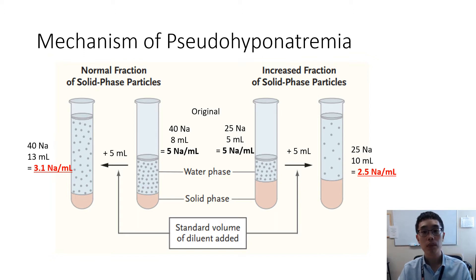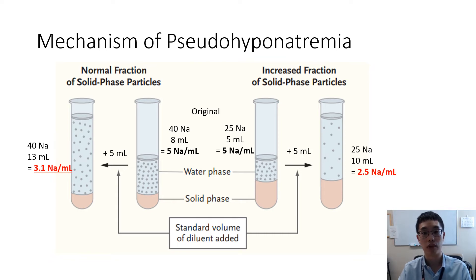We can demonstrate how this works on this diagram. The laboratory typically spins down the blood sample to separate it into two different phases: a solid state and a water phase. The water phase is then diluted by a fixed volume and the detector then assesses the concentration of the diluted sample.